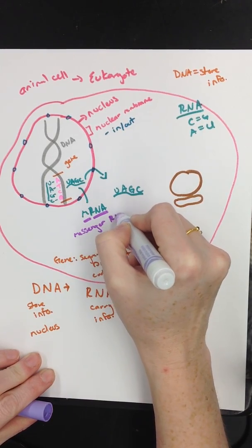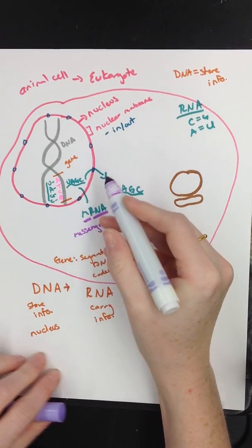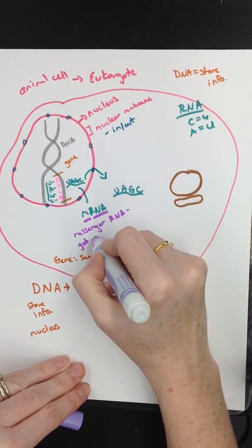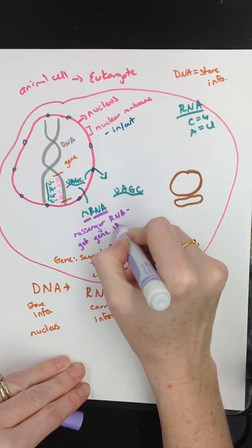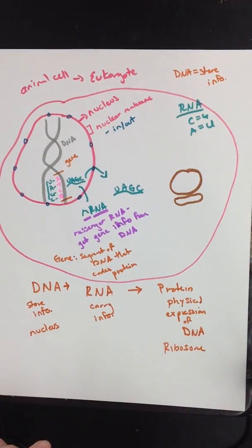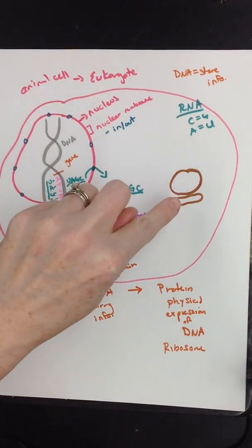So this is messenger RNA. DNA, his entire function, his job, is to get the gene info from DNA. That's his job. He's a messenger. So he went to my DNA, he grabbed the message, and then he left.